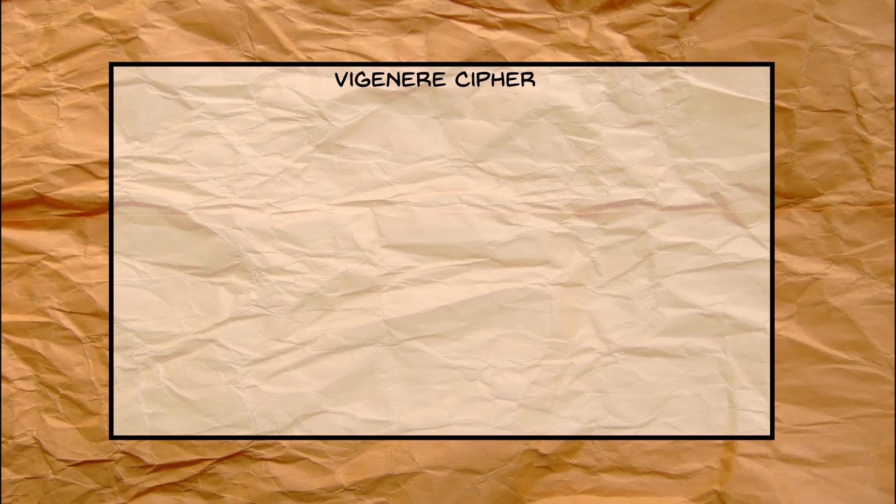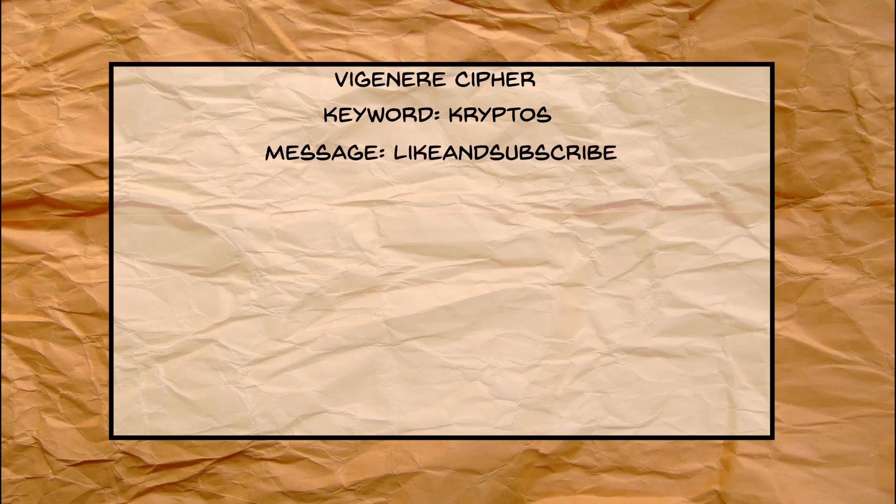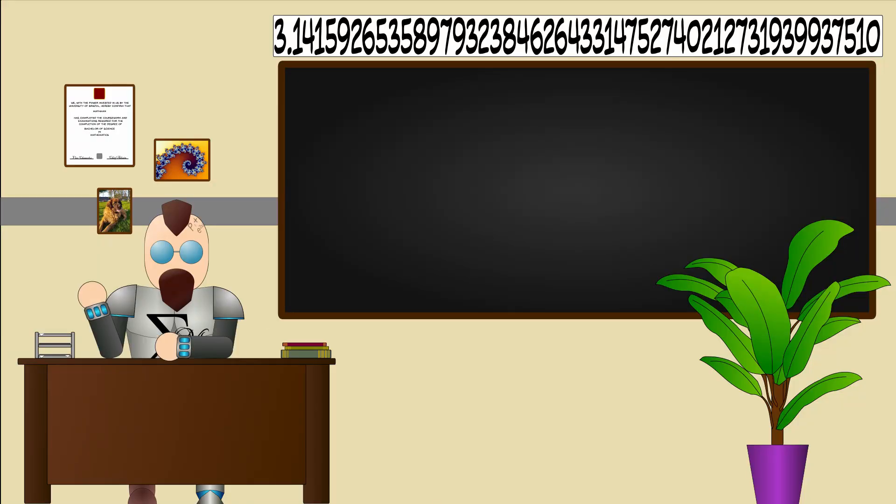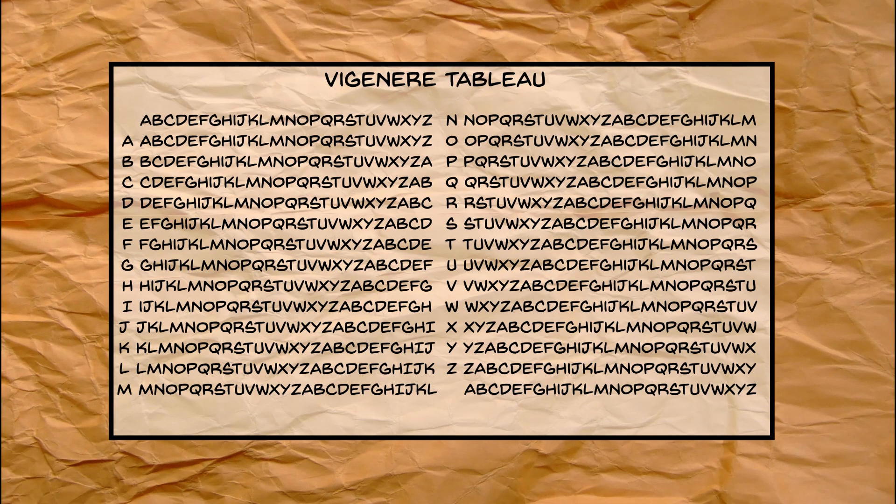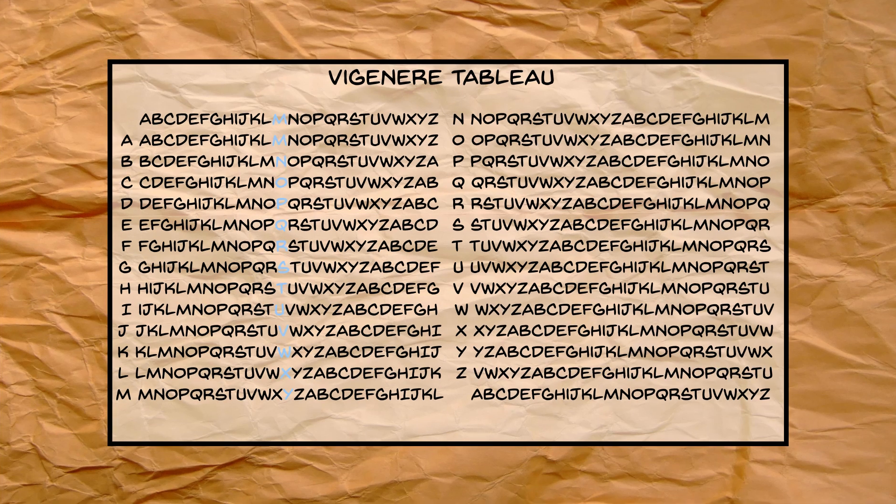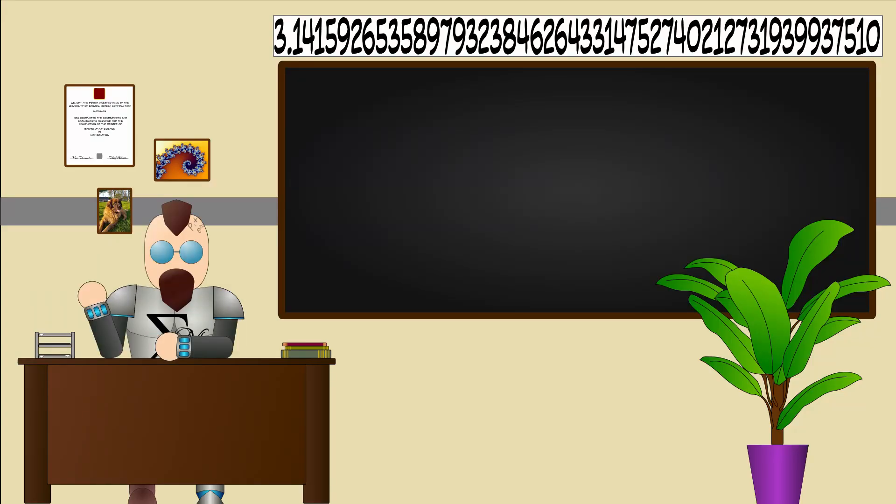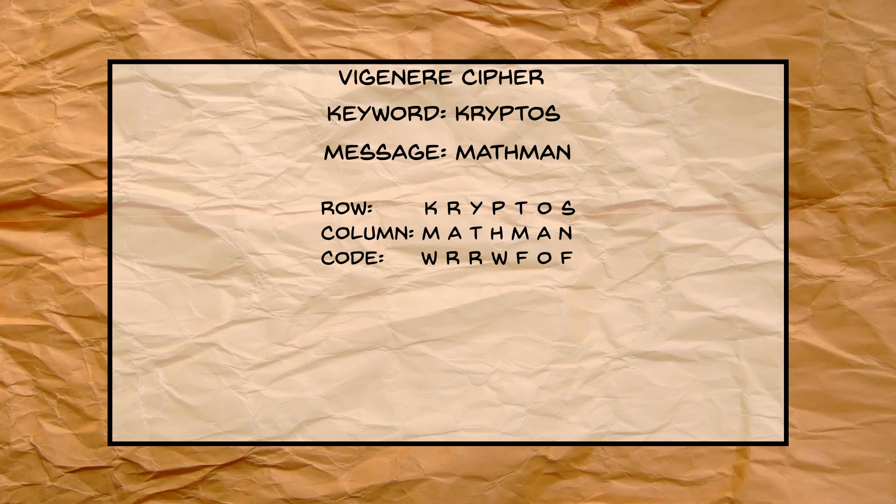Now you choose a keyword. Let's say Kryptos. Now we need a message to encrypt. How about mathman. Now we copy the keyword so the message and the key have the same length. Luckily that is already the case. Now we look at the tableau. The first letter of the message is m and the first letter in the key k. Then the letter in column m and row k is the coded letter. In this case w. Doing this with the whole text gives us wrrwfof.